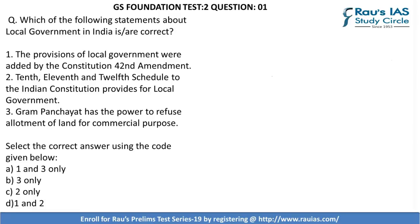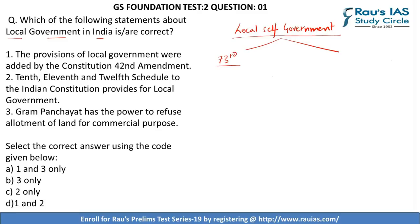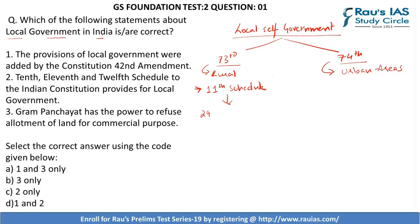Question 1 is in reference with local government in India. The local self-government in India was added by way of two Constitutional Amendment Acts. The 73rd Constitutional Amendment Act is in respect with local self-government in rural areas, whereas the 74th Constitutional Amendment Act is in reference with urban areas. The 73rd Amendment Act also added the 11th Schedule to the Indian Constitution, which deals with 29 functional aspects of the Panchayats.